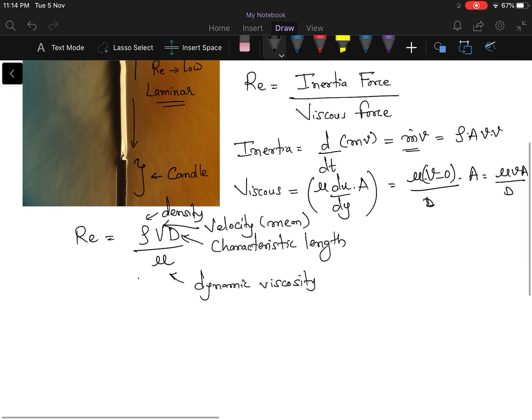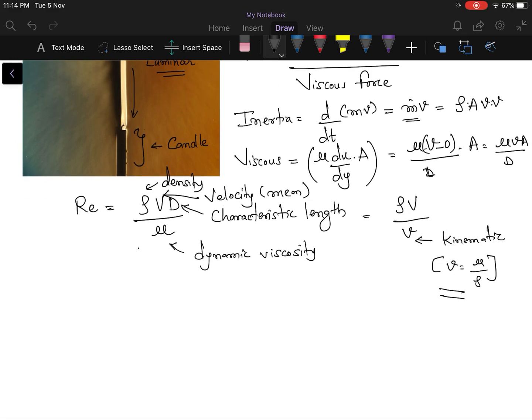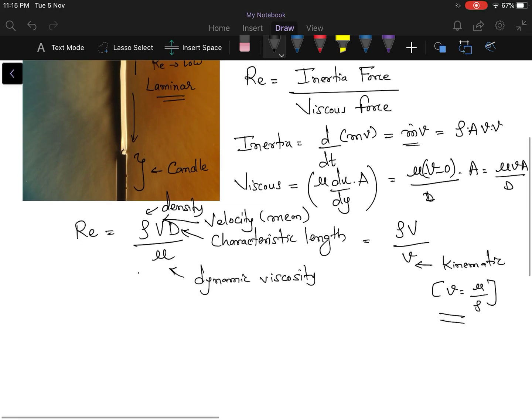in general term, and mu is dynamic viscosity. And sometimes this Reynolds number is also written as rho into v by nu, where nu is kinematic viscosity. And it is given as nu is equal to mu by rho. So you can use any of this formula for Reynolds number.